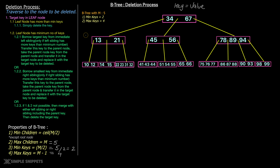Let's start with Case 1: the target key is in the leaf node. Let's say you want to delete the key 32. When the target key is in the leaf node there are two conditions: the leaf node has more than the minimum number of keys, or it has exactly the minimum number of keys. If the leaf node has more than the minimum keys, the process is very simple — you just delete the key.